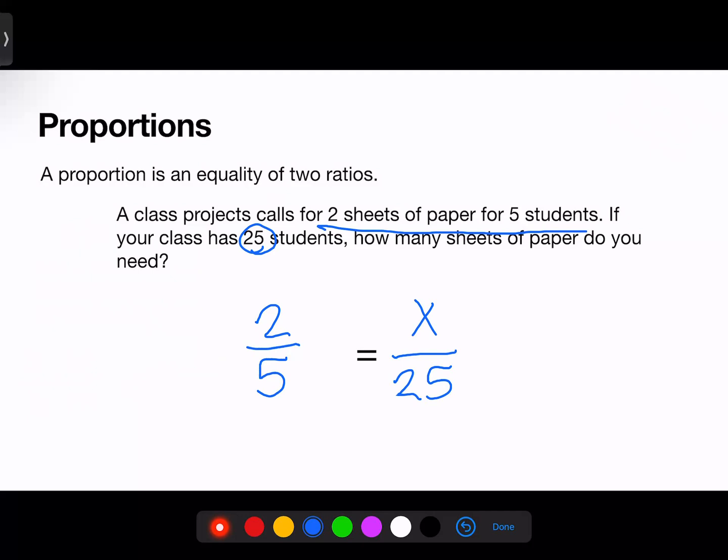This can be solved algebraically. Rather than using the complicated order of algebra, we can cross multiply to save time. 25 times 2 is 50. 5 times x is 5x. We can set these equal to each other and solve algebraically from here. Divide both sides by 5 in order to isolate x. And when x is isolated, we have 10. X equals 10, the number of sheets needed for a class of 25 students.